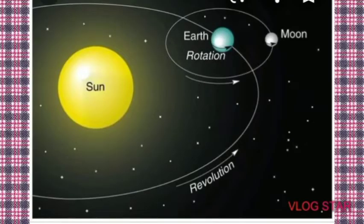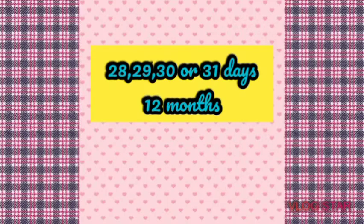A year is based on the earth's rotation around the sun. Every 4 years, there is an extra day added to the month of February, called leap year, which has 29 days in that month and 366 days in that year.